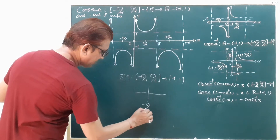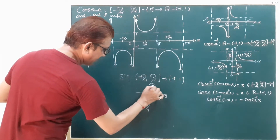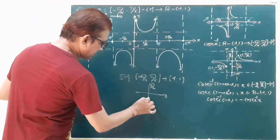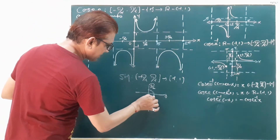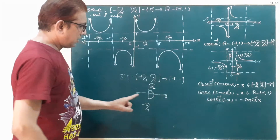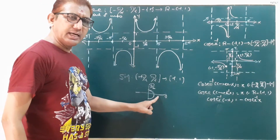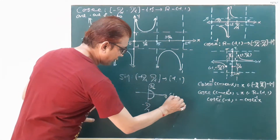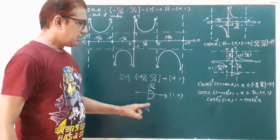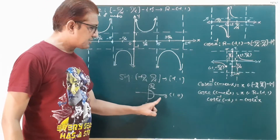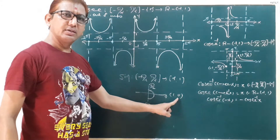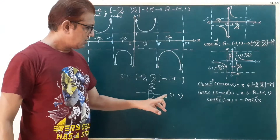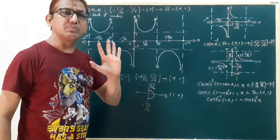Here we draw the figure with minus pi by 2, 0, and pi by 2. This interval is the domain of the sine function. At angle 0, sine 0 value is 0, because here our point is (1, 0), angle is 0, so sine 0 degree equals 0. And cosecant is the reciprocal of sine, so cosecant 0 is not possible.